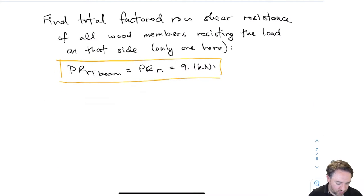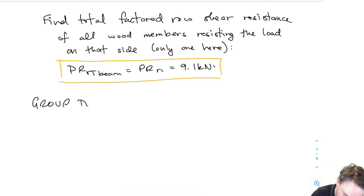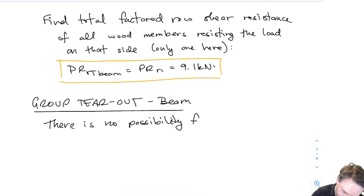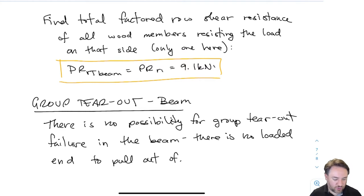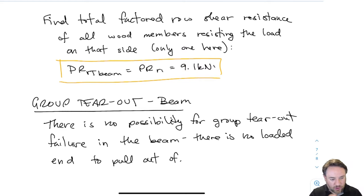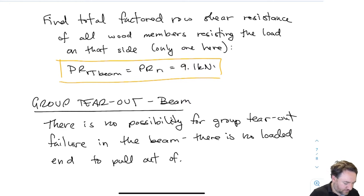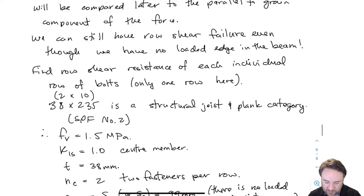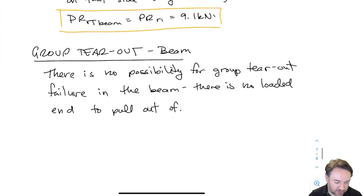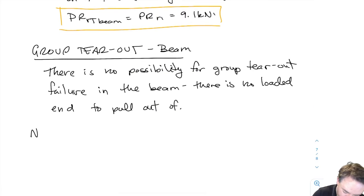There is not going to be any group tearout here because we're not at a loaded end. Since there's no loaded end from which to pull a group tearout plug, we can't have group tearout. So row shear and group tearout are both parallel-to-grain phenomena; the last parallel-to-grain check is net tension.